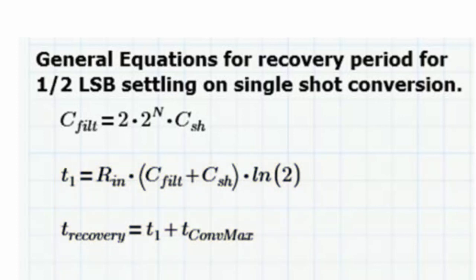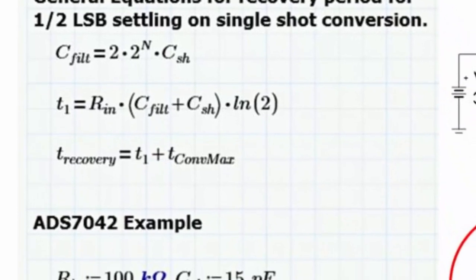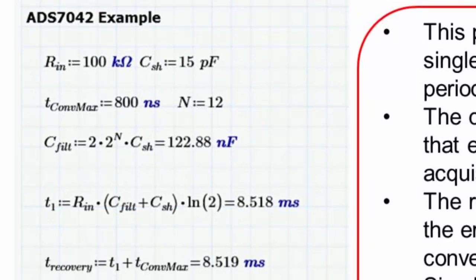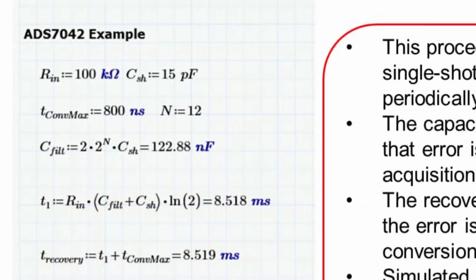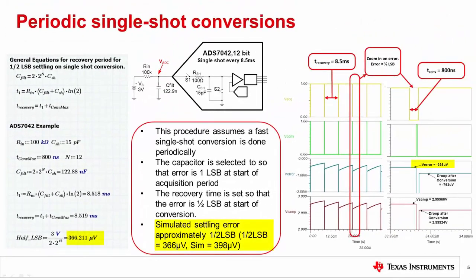The main advantage of this technique is that it has minimal impact on the microcontroller's processing overhead. Furthermore, this method can be applied to multiplex devices so that a periodic scan of all the multiplexer inputs can be used to read all the system monitor voltages. In this example, a large 100K source impedance is used with a full-scale 3-volt signal. The external CFILT capacitor is selected to be 122 nanofarads using the equation to introduce 1.5 LSB error at the start of the conversion period. Applying the values to this relationship yields a recovery time of 8.5 milliseconds. Simulations show that the error is comparable with the expected half LSB of error.